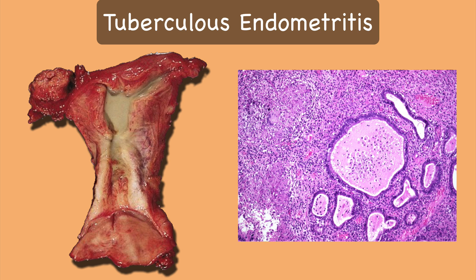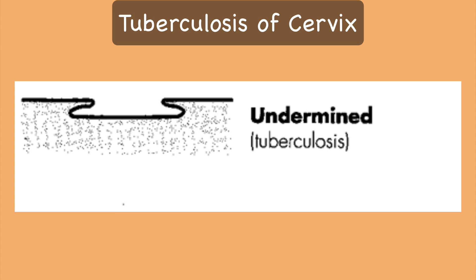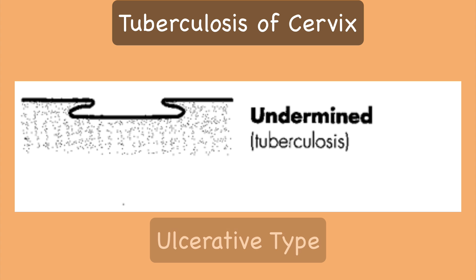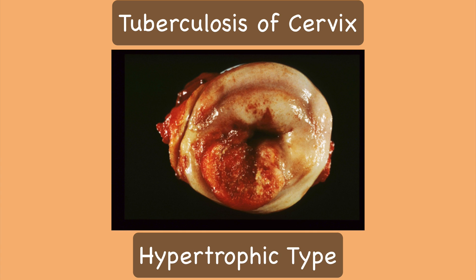This is especially seen in post-menopausal women with a stenosed internal os. Tuberculous involvement of the cervix is of two types. There may be a serpiginous ulcer with undermined edges, which is known as the ulcerative type. The other type is called the hypertrophic or papillary type, where there is an exophytic growth on the surface with ulceration. It should be noted that the exophytic type of tuberculosis is an important differential diagnosis of invasive carcinoma of the cervix.